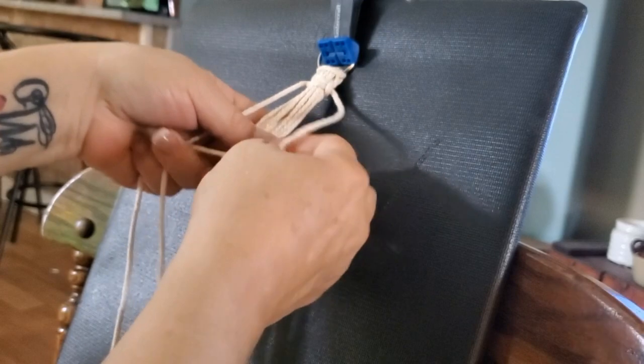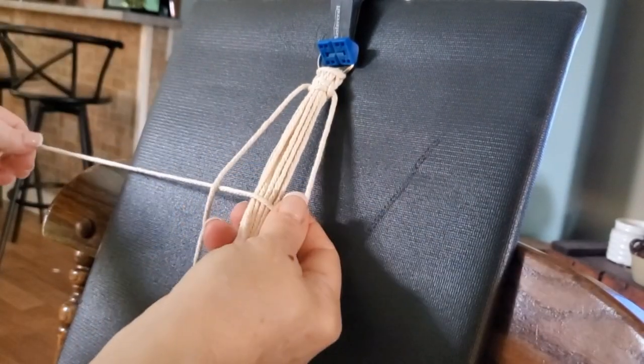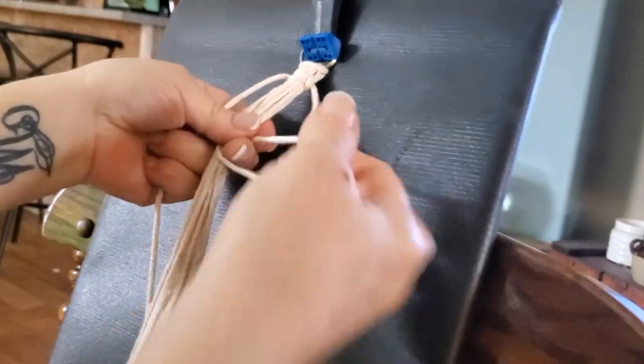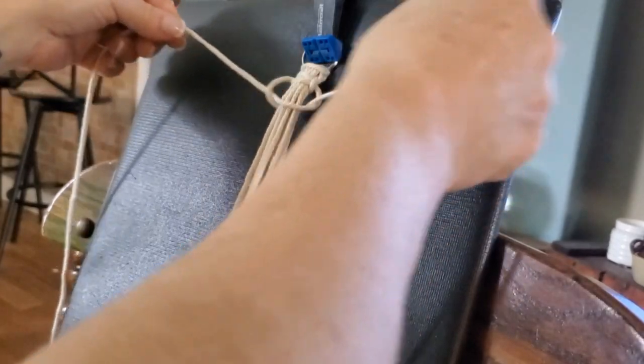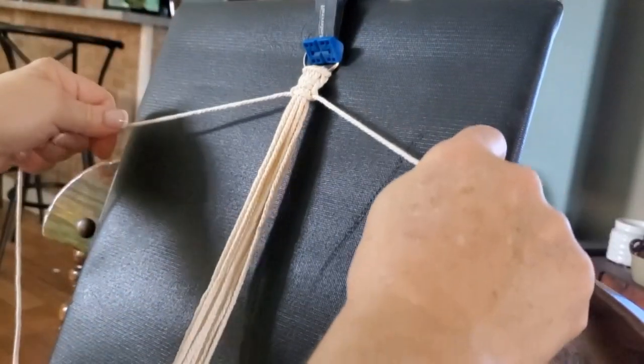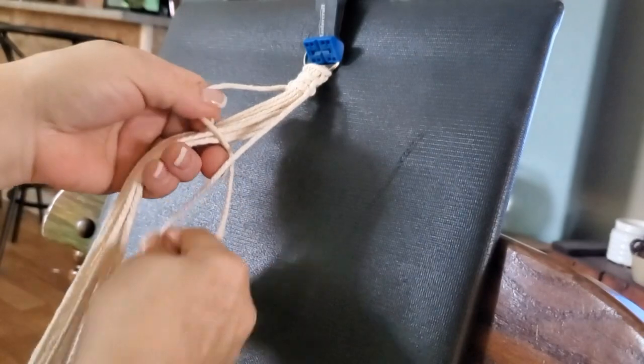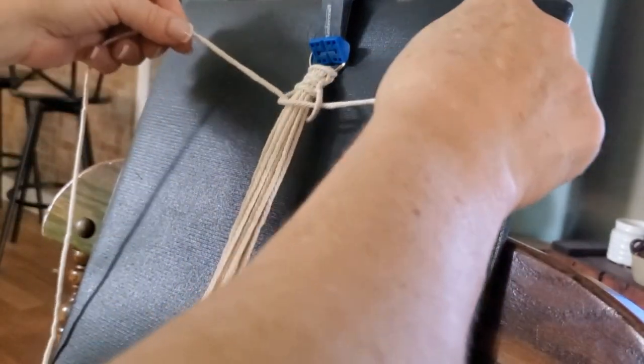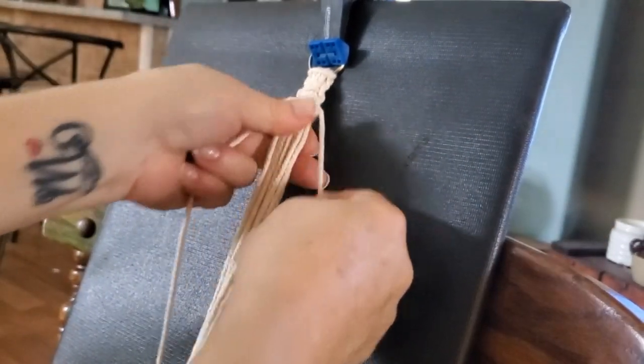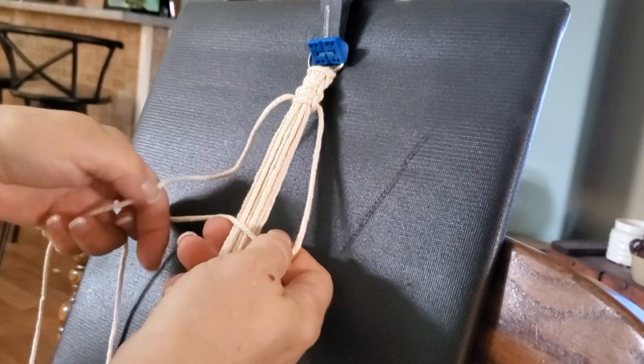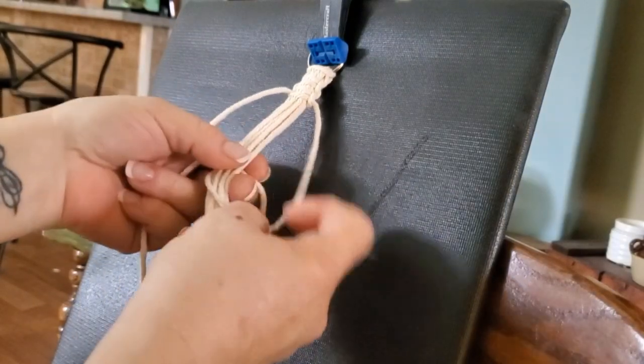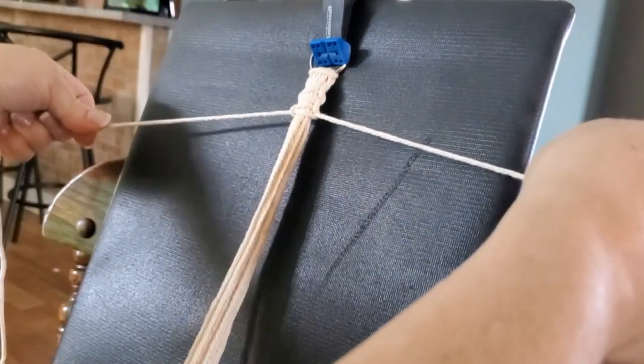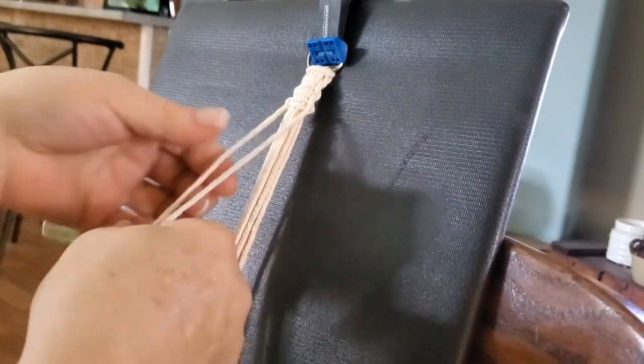Now we can continue working in this square knot pattern until we reach the desired length. You can make it as long as the strings are that you have, or you can make it short. It totally depends on what you like or what you think looks good. I usually don't make the binding too long. This one will probably be around four inches or I would say six square knots.